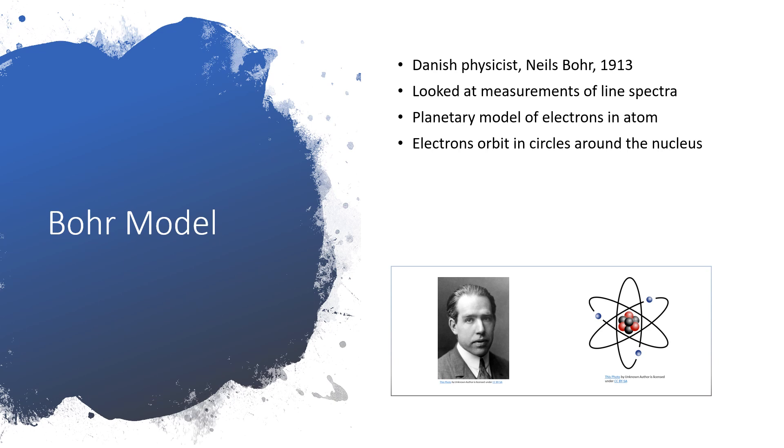The Bohr model was proposed around 1913 by the Danish physicist Niels Bohr. He developed his model from looking at various measurements of line spectra for different elements. He proposed the idea that electrons orbit around the nucleus of the atom in certain stable circular orbits, just like a planet orbits around the Sun.